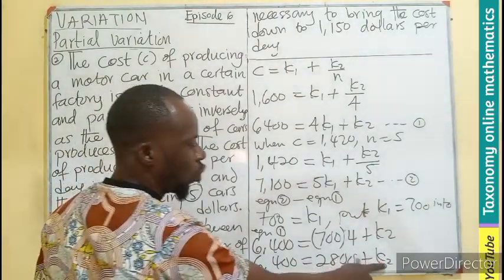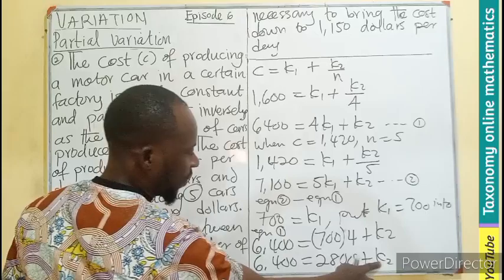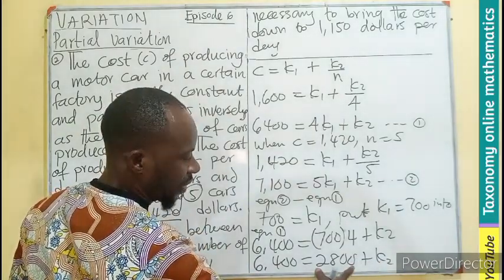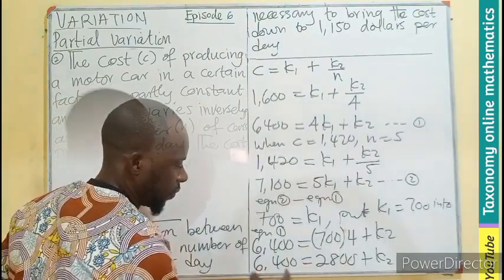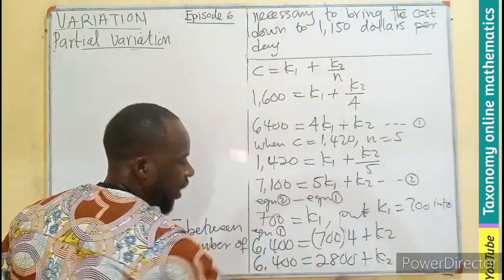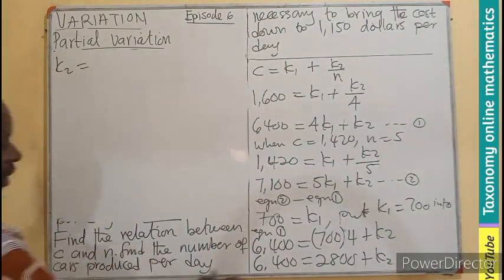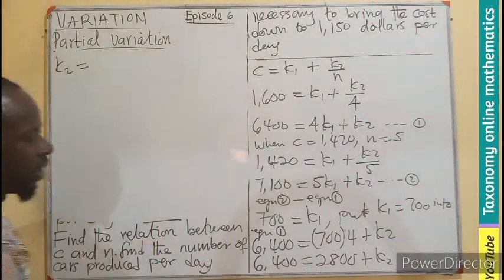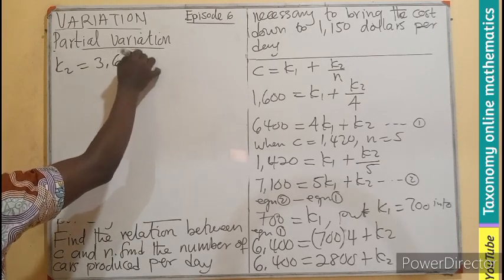You can see the only unknown is K2. So we subtract. If K2 stands here, 2,800 will be coming here to subtract from 6,400. So this minus this will give us K2, meaning your K2 will just be 3,600.